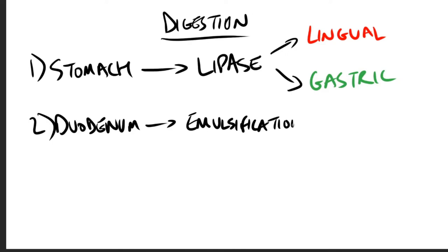Number two is the critical process of emulsification of dietary lipids in the duodenum. Emulsification increases the surface area of the hydrophobic lipid droplets so that the digestive enzymes can act on them effectively. Now emulsification is accomplished by two complementary mechanisms: one is the detergent properties of the bile salts that are released